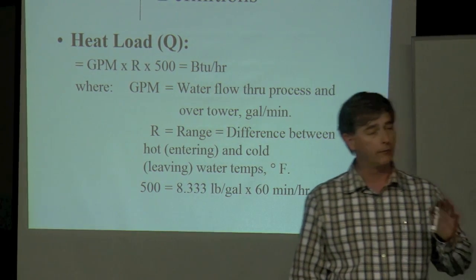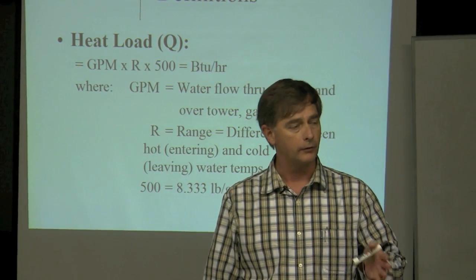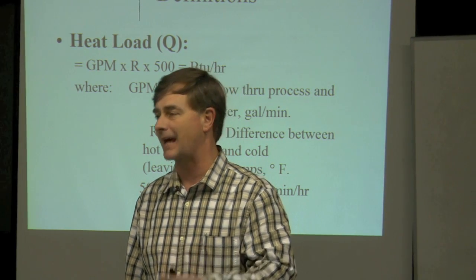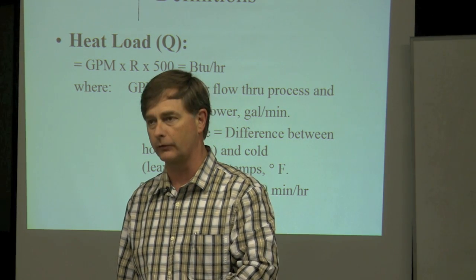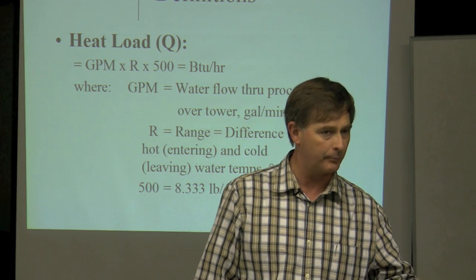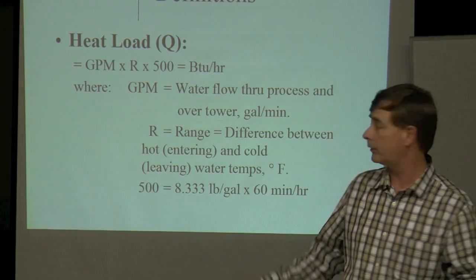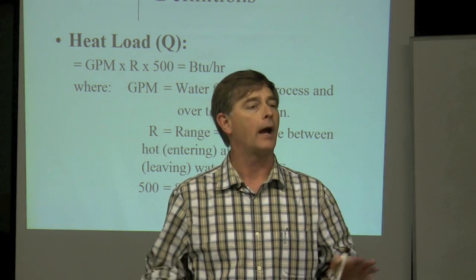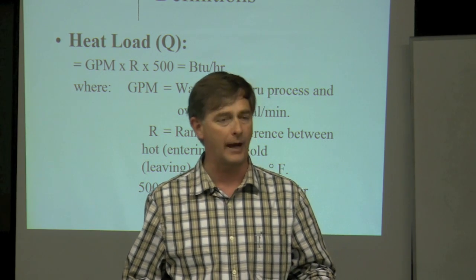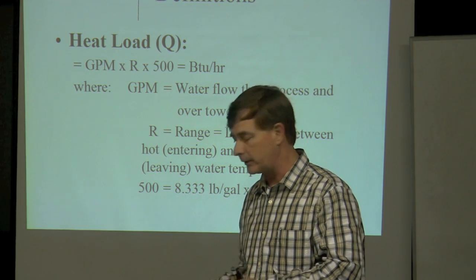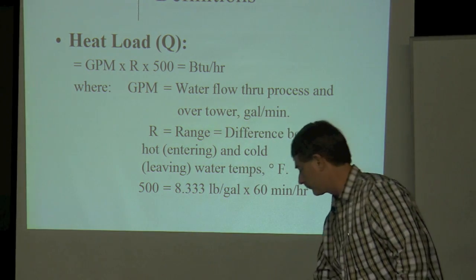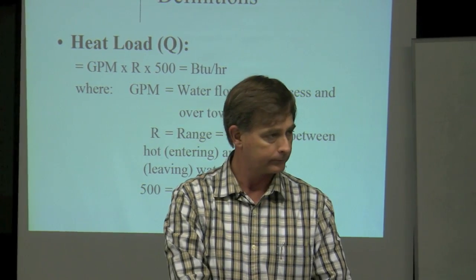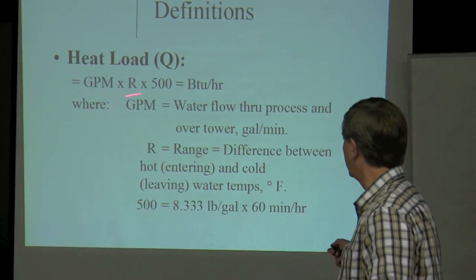On your formula sheet, I've given you some heat load formulas. You can take a look on the cooling tower side. Understand that when we're looking at the size of a chiller, we're looking at it on the evaporator side, because that's what we're most interested in. If you want to apply that same formula to this side of the system, you can tell the performance of your tower. It's basically the same if you look at the BTU formula on your formula sheet — it matches that.